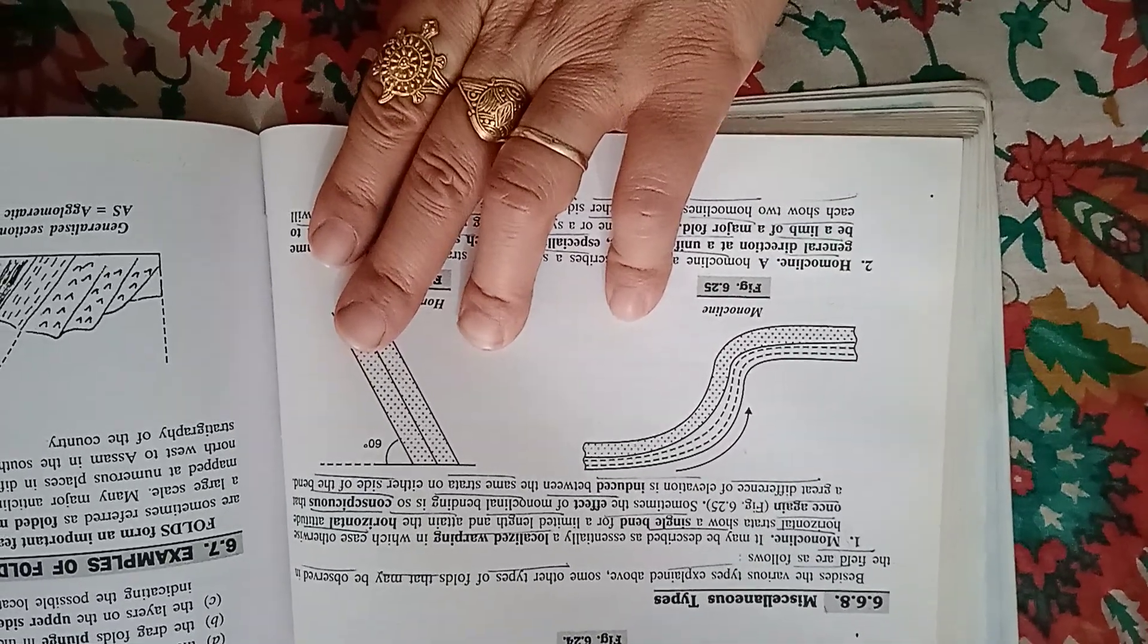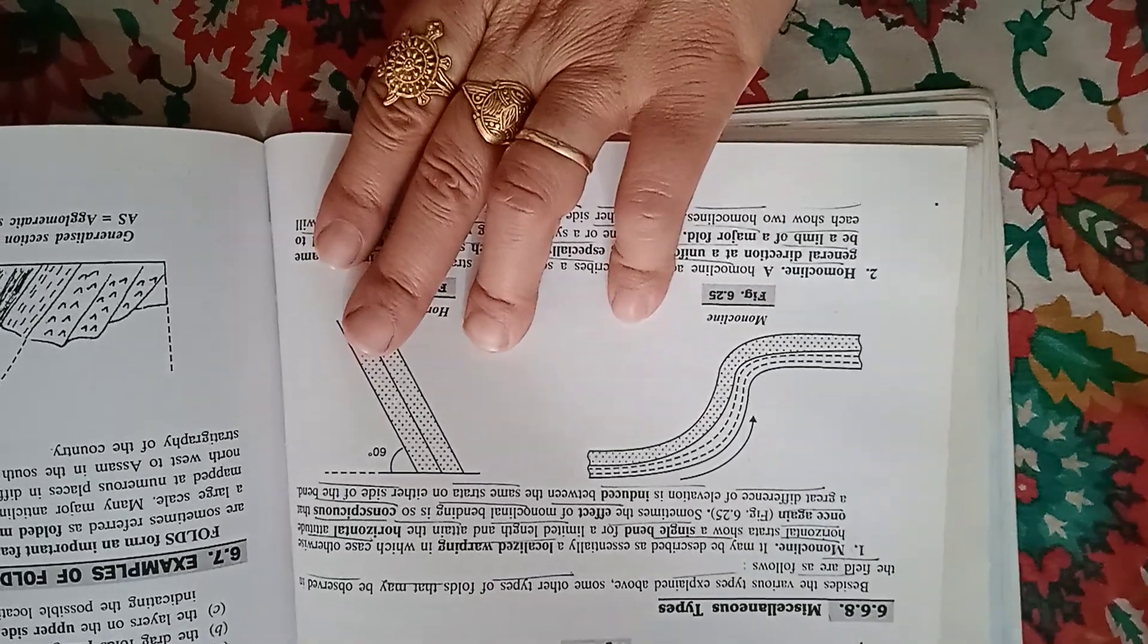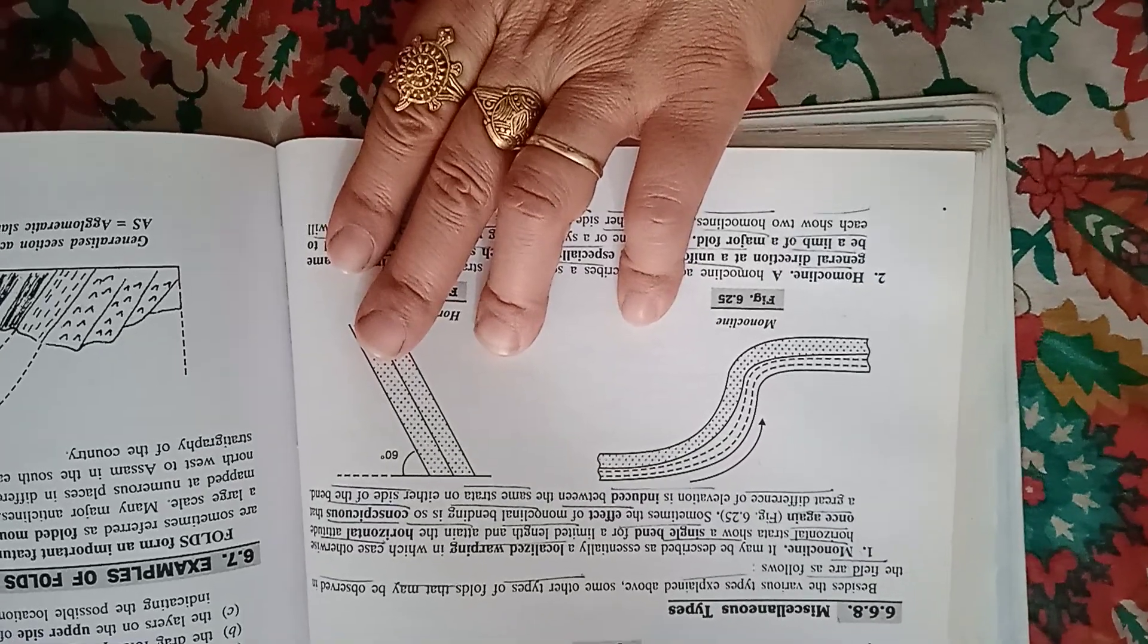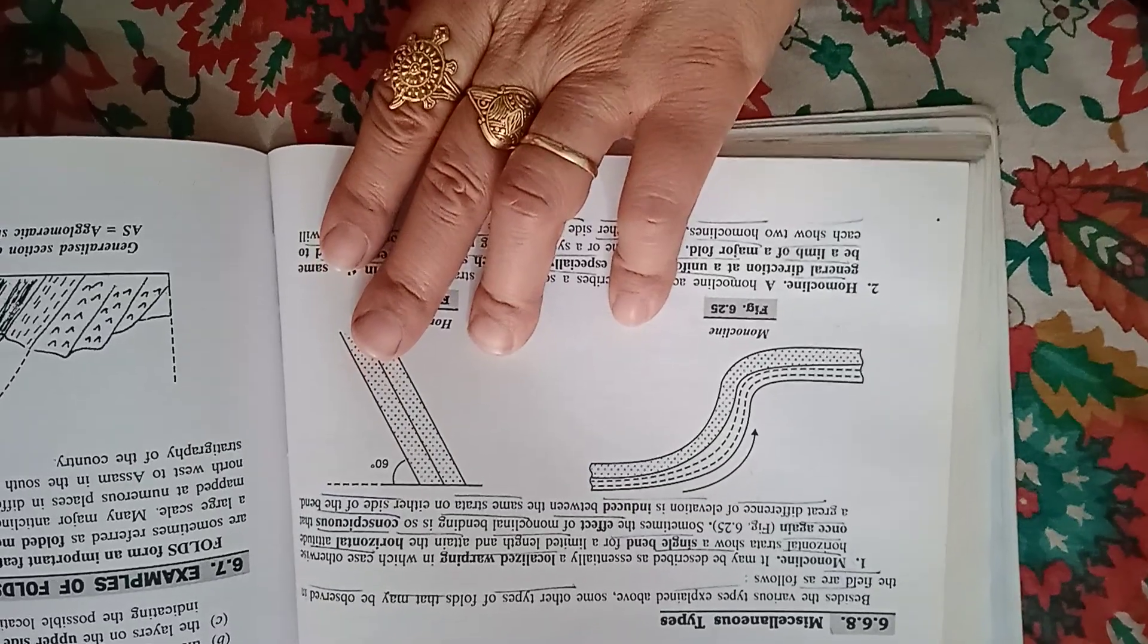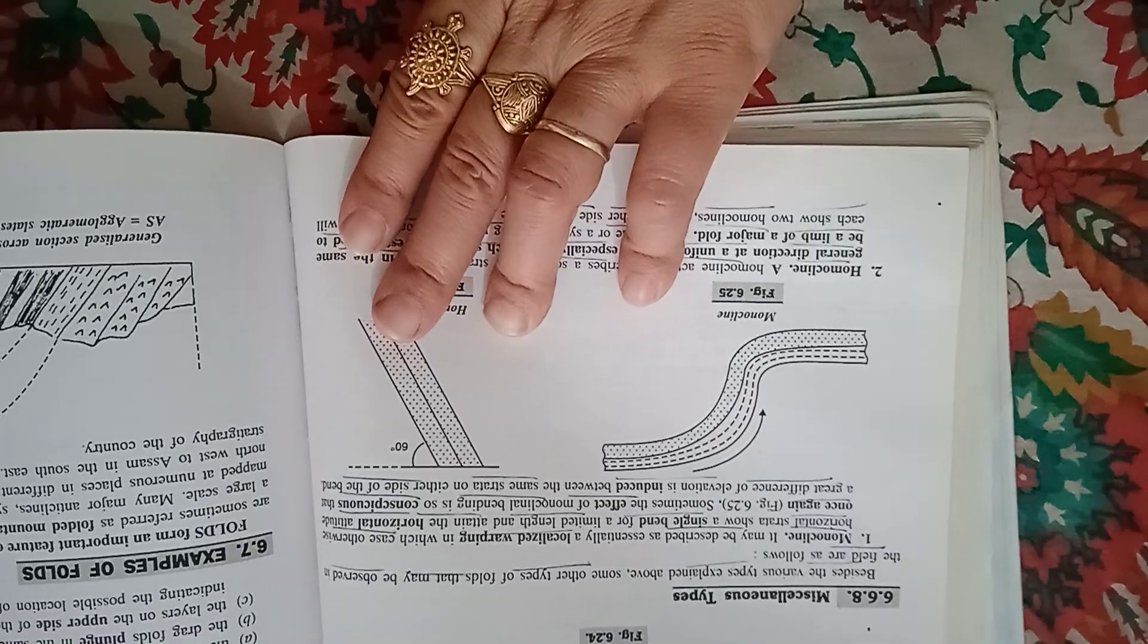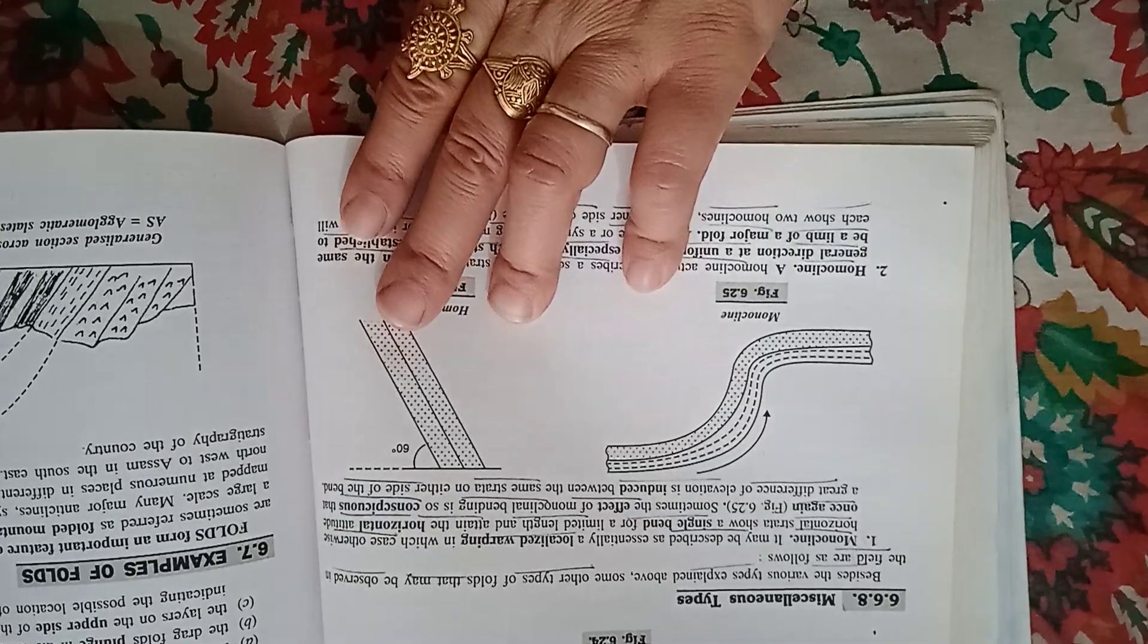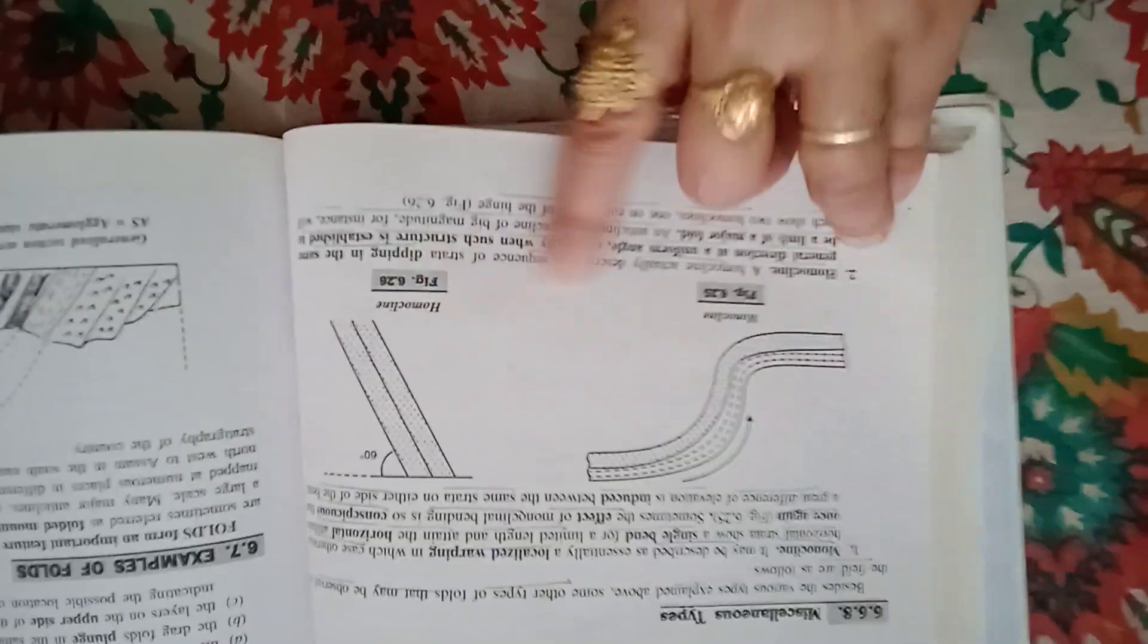In monoclines, otherwise horizontal strata form a single bed for unlimited length and attain horizontal attitudes once again. Sometimes the effect of a monoclinal band is so conspicuous that a great difference of elevation is induced between the same strata on either side of the band, as shown in the figure of monocline and homocline.